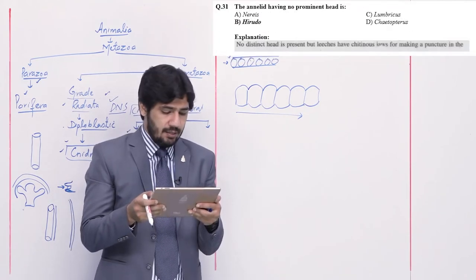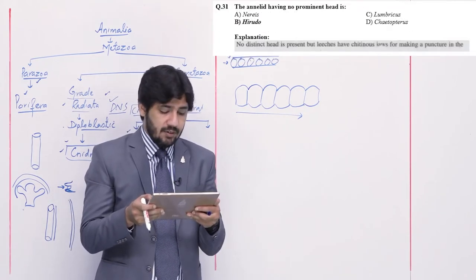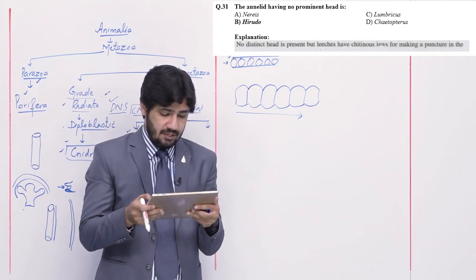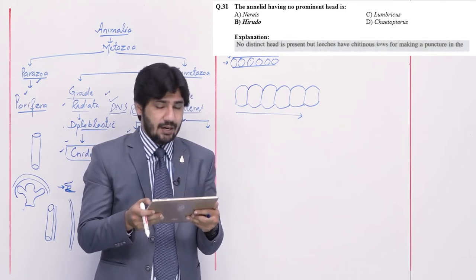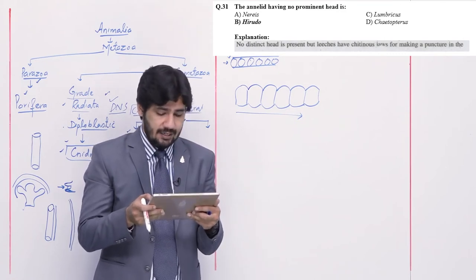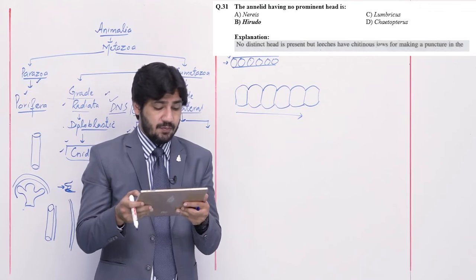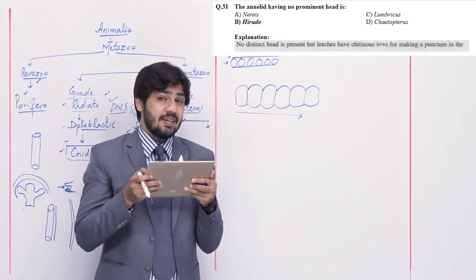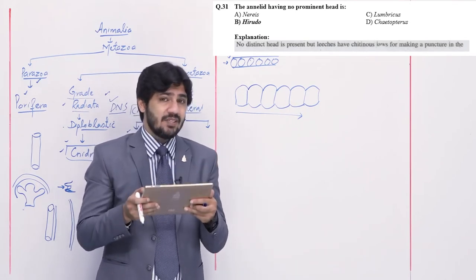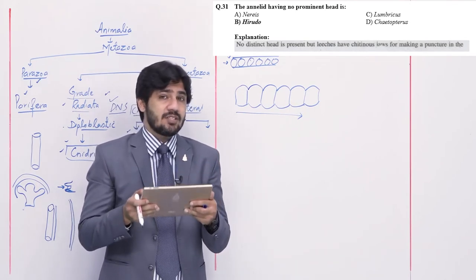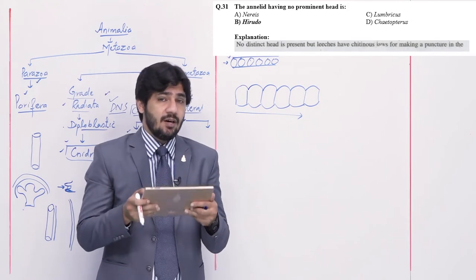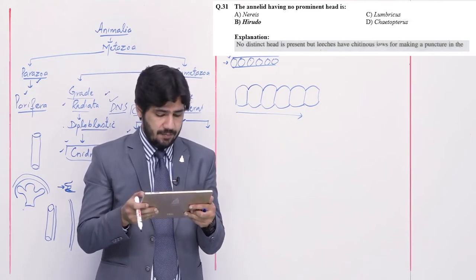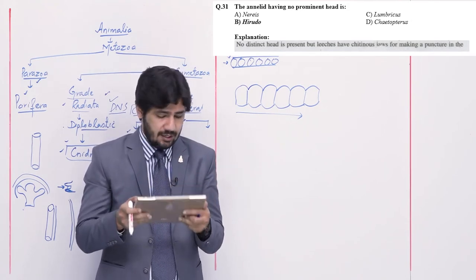Question number 31: the annelid having no prominent head is — alpha Nereis, beta Hirudinea, charlie Lumbricus, and delta Chaetopteris. A prominent head does not exist in one of the three annelid groups. The member mentioned is beta — Hirudinea. In the others, a prominent head exists.